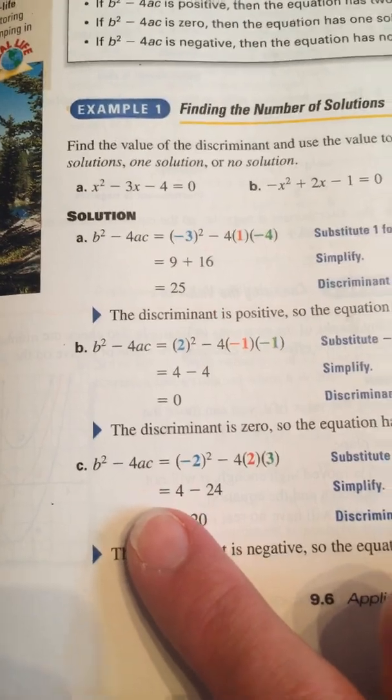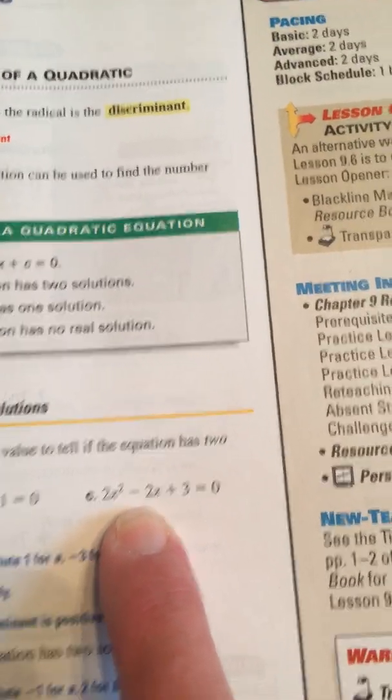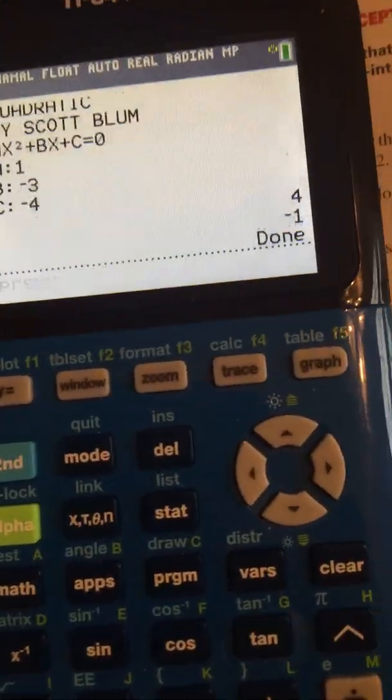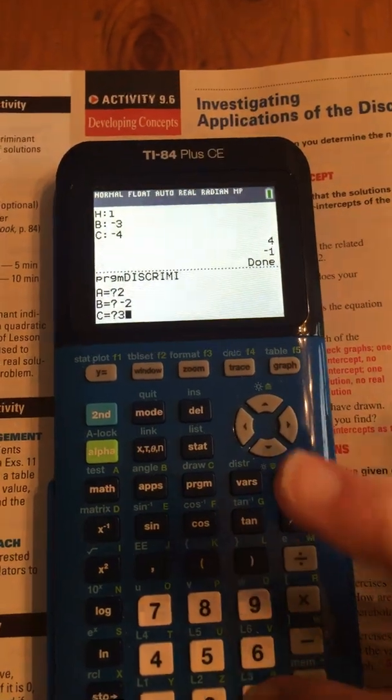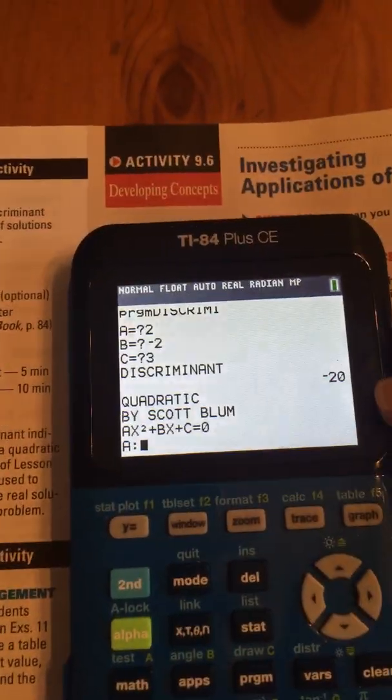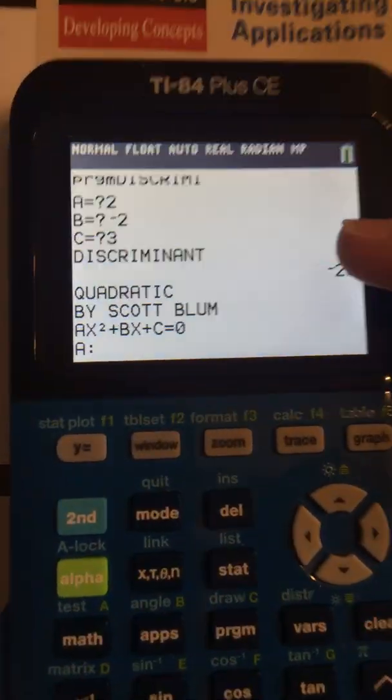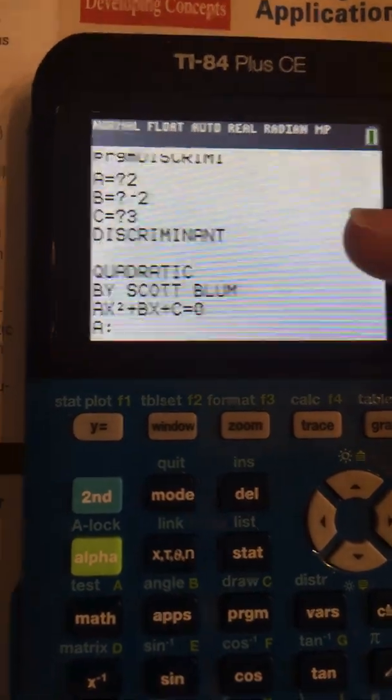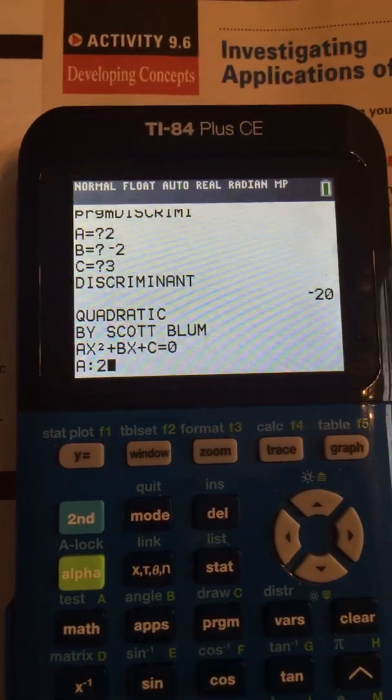But let's try this one. This one is our C one. We're going to do this one. Okay? So we're going to run this again. And usually, if you just hit enter, it'll run again. Yep, it did. Okay? So our A is 2, B is negative 2, and C was 3.